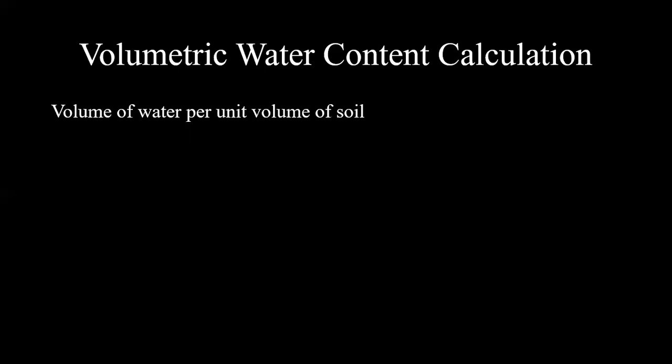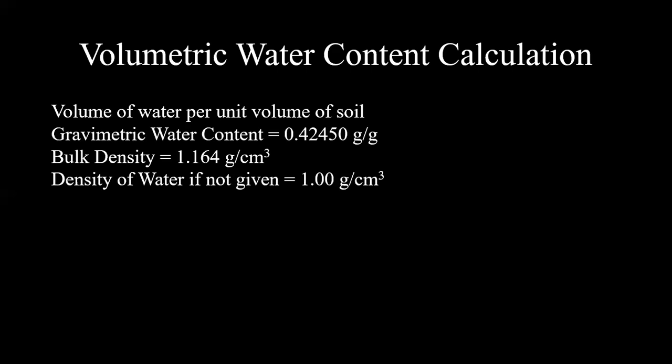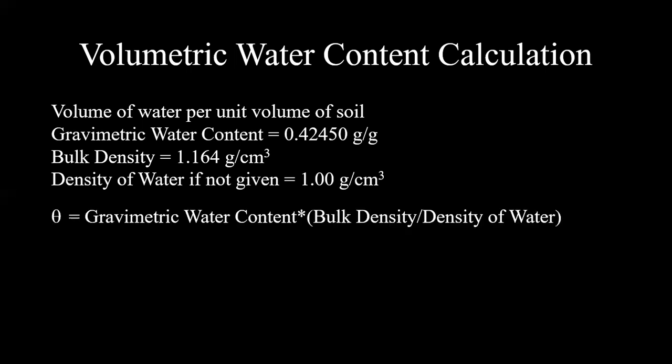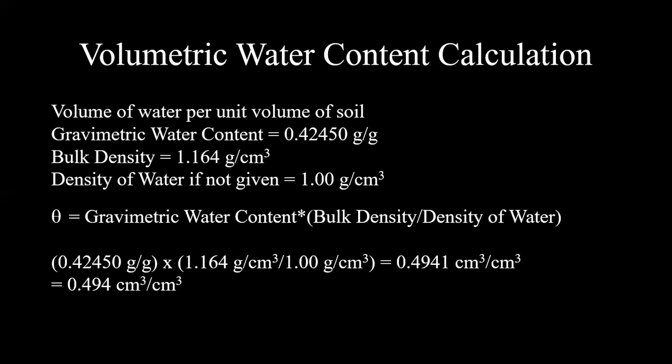Finally, we're going to calculate volumetric water content. The definition of volumetric water content is volume of water per unit volume of soil. We need the gravimetric water content, bulk density, and the density of water. Since we aren't given density of water, we assume it is 1.00 grams per centimeters cubed. The equation is gravimetric water content times bulk density divided by density of water, which gives us 0.4941, or 0.494 centimeters cubed per centimeters cubed when considering significant figures. Volumetric water content could be unitless but we typically present it in centimeters cubed per centimeters cubed.